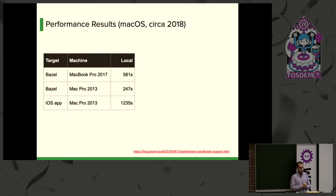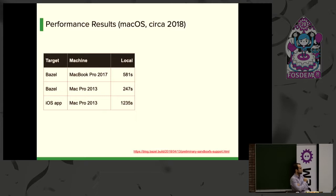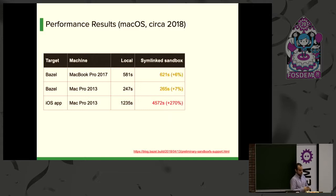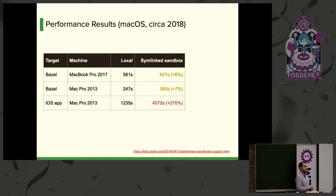So how does this behave? I ran some measurements about a year and a half ago on macOS, which is where we have the most performance problems — on Linux things are pretty good. We had three different builds: two building Bazel with itself, and one building a large iOS app. Without sandboxing we had baseline times. When we enable the symlink sandbox, the original one, Bazel itself shows a tiny increase — expected, since any sandboxing has overhead. But for the iOS app the increase is massive — just not acceptable for interactive development.